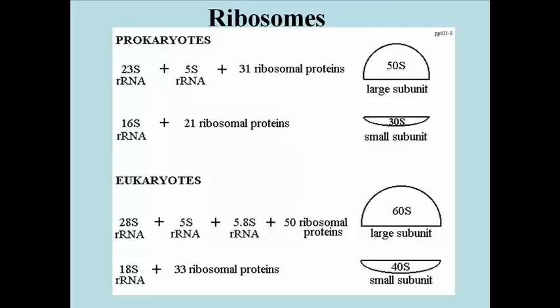Let's turn our attention now to ribosomes. This illustration summarizes what we know about them. They're composed of two subunits, a large one and a small one. Each subunit is composed of one or more ribosomal RNAs and 21 or more proteins. Prokaryotic ribosomes are smaller than those of eukaryotes, due in part to larger ribosomal RNAs and more ribosomal proteins in the eukaryotic subunits.